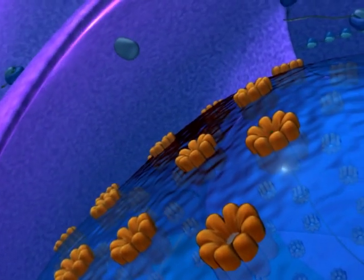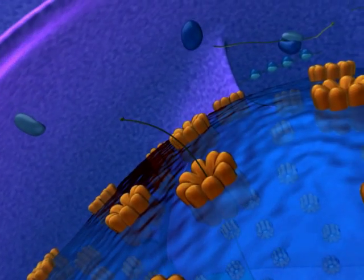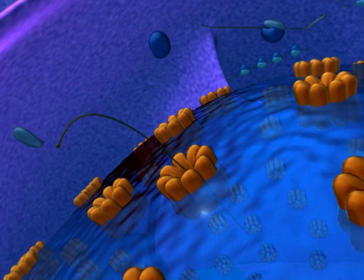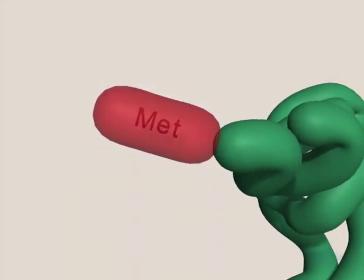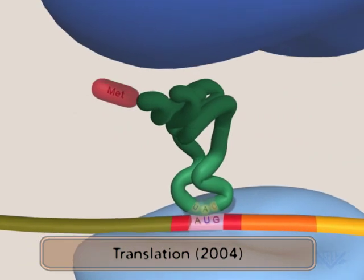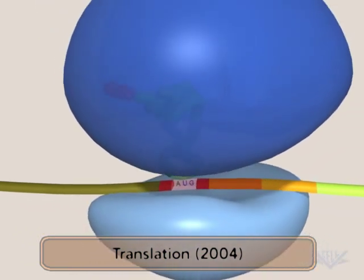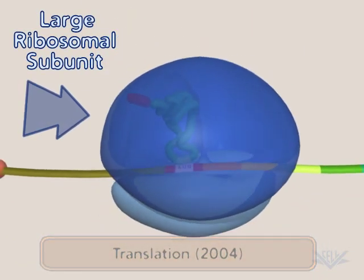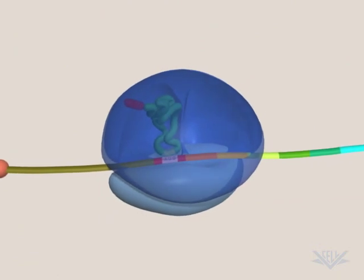If we follow the final mRNA products out of the nucleus, we can see them in action during the process of translation. Here, you can see a particulate organelle called the ribosome. It is partially composed of the rRNA we just spoke of. Attached to it is the mRNA.